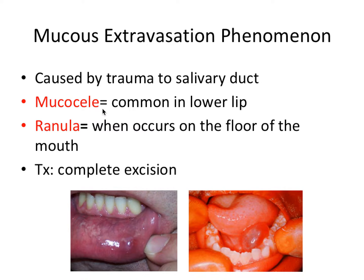Mucocele just means that it's containing mucus and it's most common on the lower lip. This is a picture of a very classic mucocele — sort of this bluish translucent appearance, super common. It would basically occur if you bit your lip a little too hard, puncturing and causing trauma to a salivary duct, then you get blockage and it forms this collection of mucus fluid in this layer of tissue. When it occurs on the floor of the mouth, it's no longer called a mucocele but it's called a ranula, which means frog's belly.